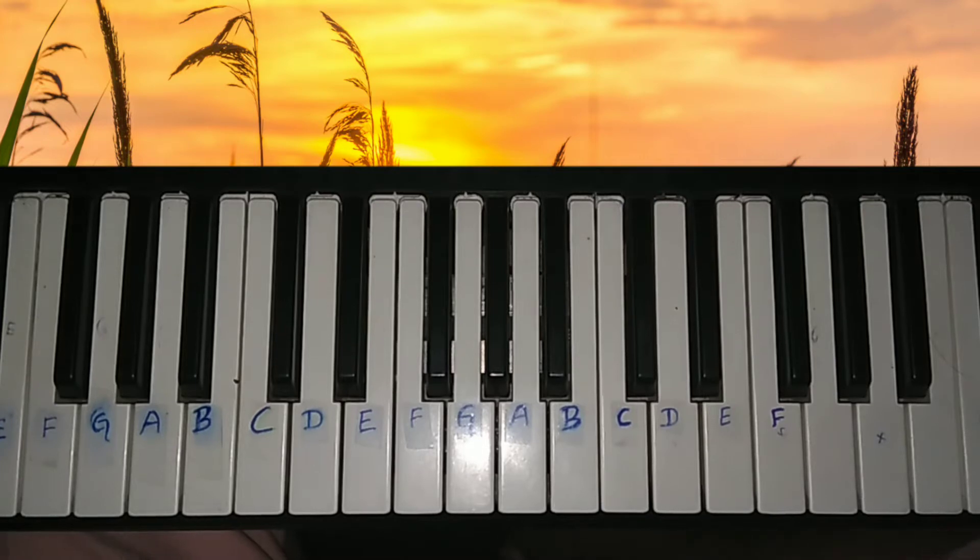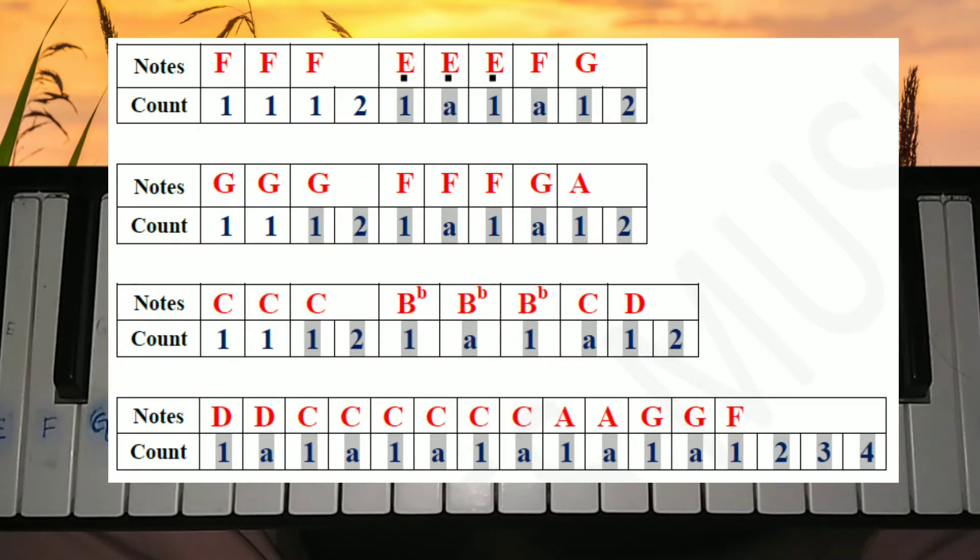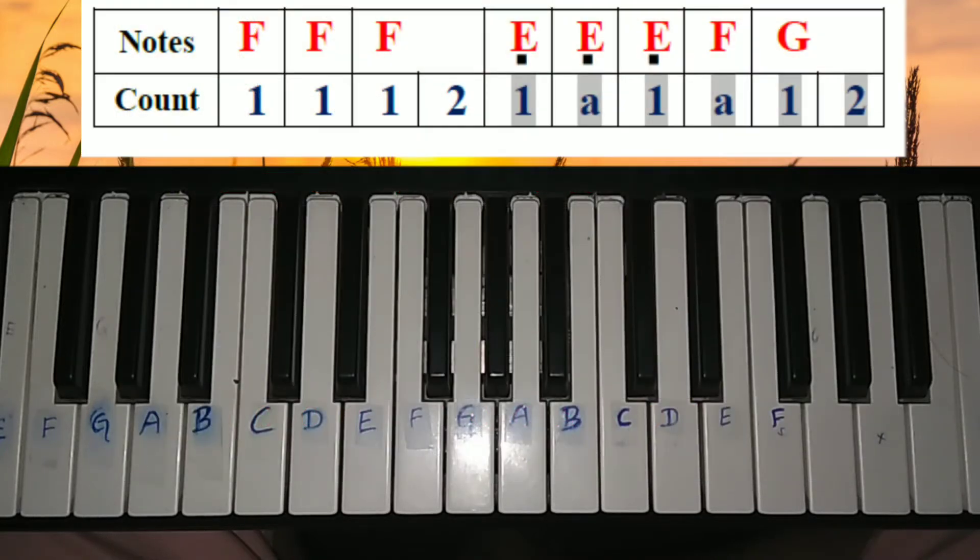Today we are going to learn three more music pieces in the F scale. When you see these music pieces, you can see they consist of whole notes, half notes, quarter notes, and eighth notes. Let's start. First, it begins with F, F, and F.